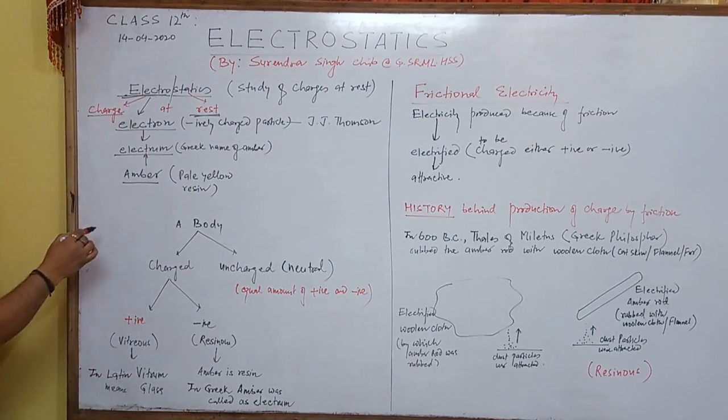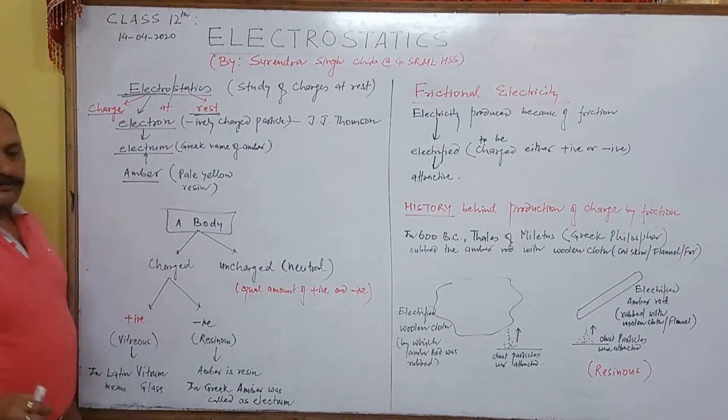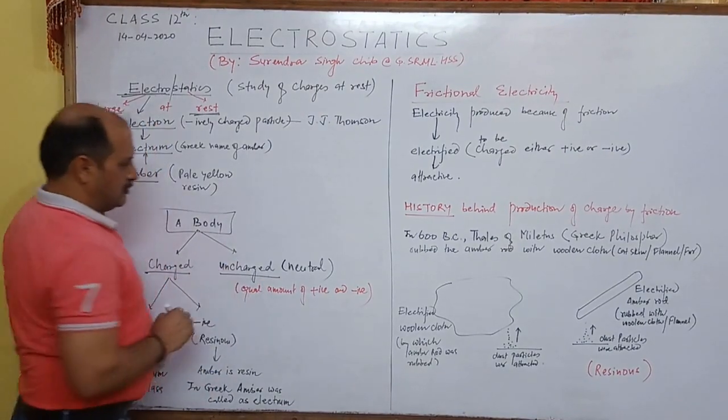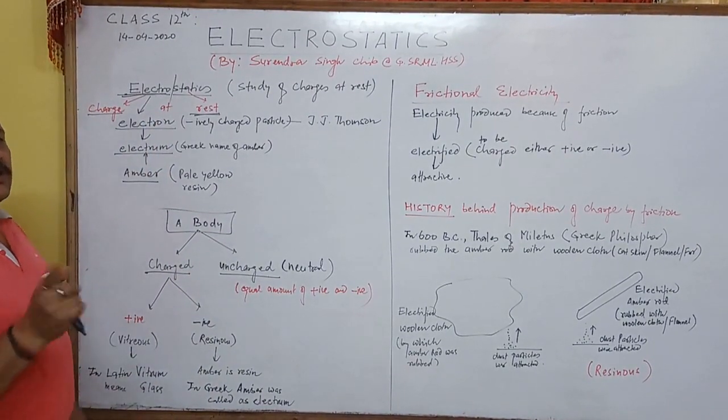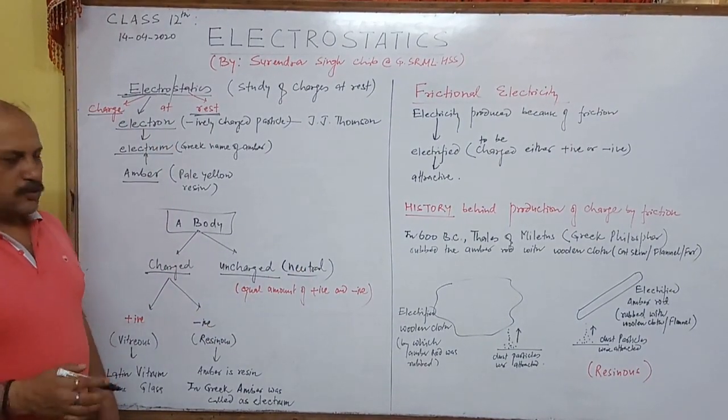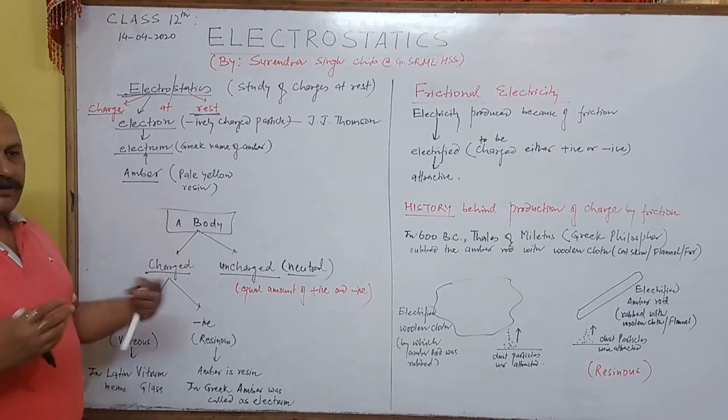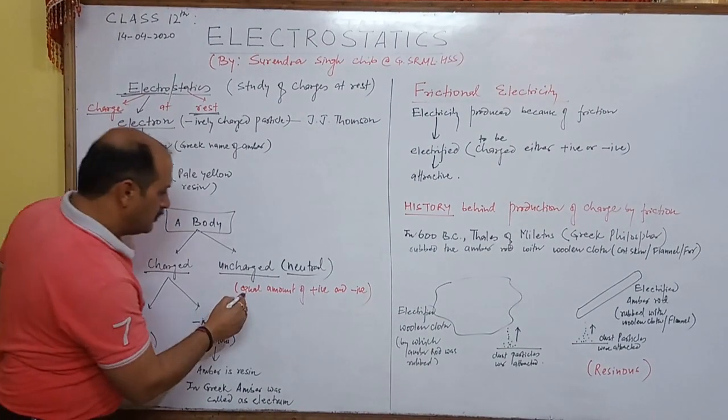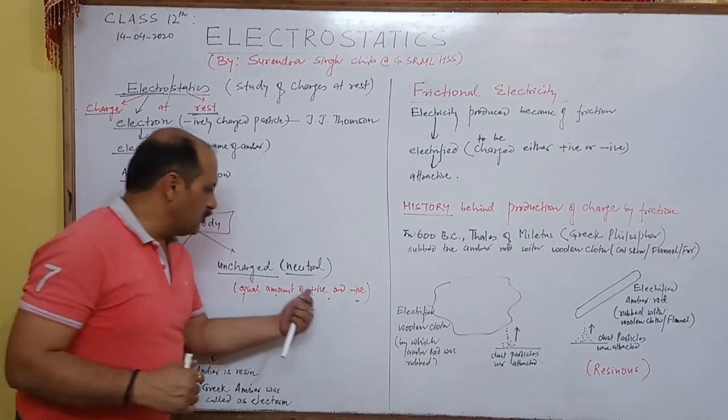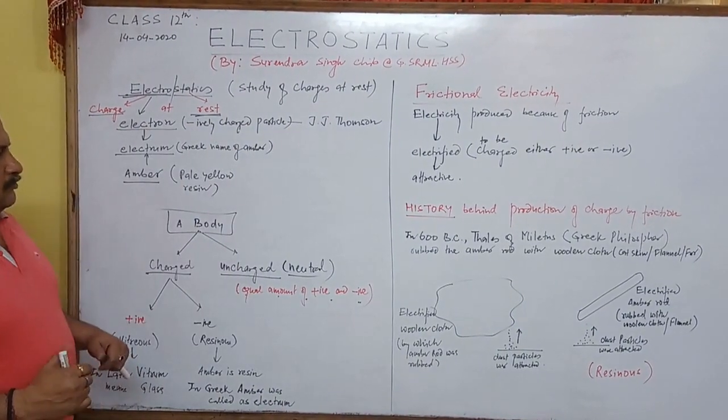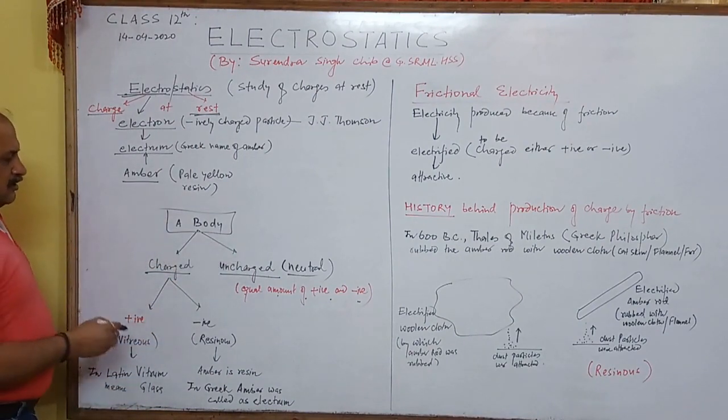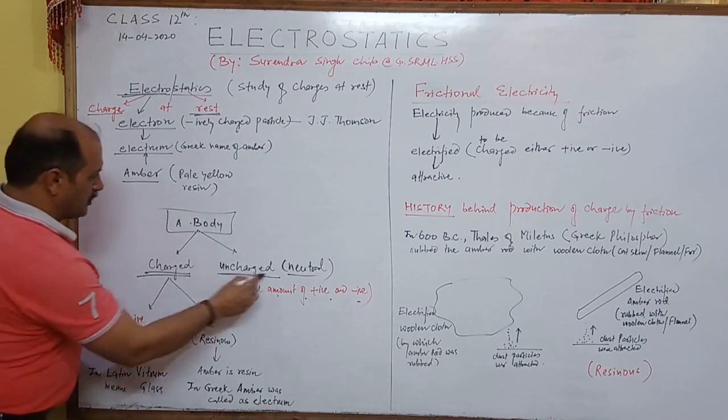Charge a body, any body is of two types. Whether it is Charged or Uncharged. First of all I will explain you what is Uncharged Body. Uncharged body is also called a Neutral. Today we say the body is Uncharged means it neither attracts or repels anything. It means it has equal amount of positive and negative charge.